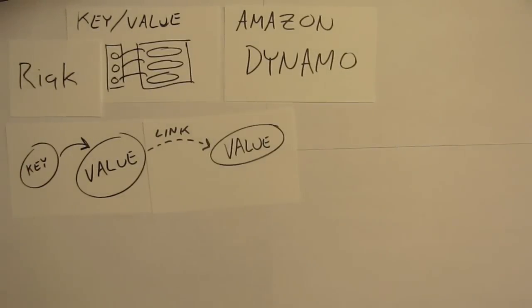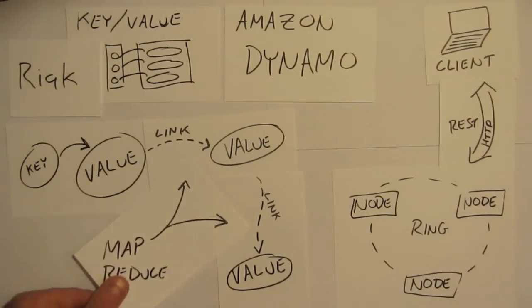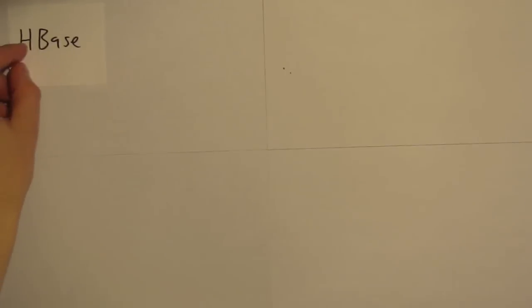Riak's a key-value store, implements Dynamo, shards data out to a ring. It's REST-based with MapReduce, link-walking functions, and vector clocks, made in Erlang.